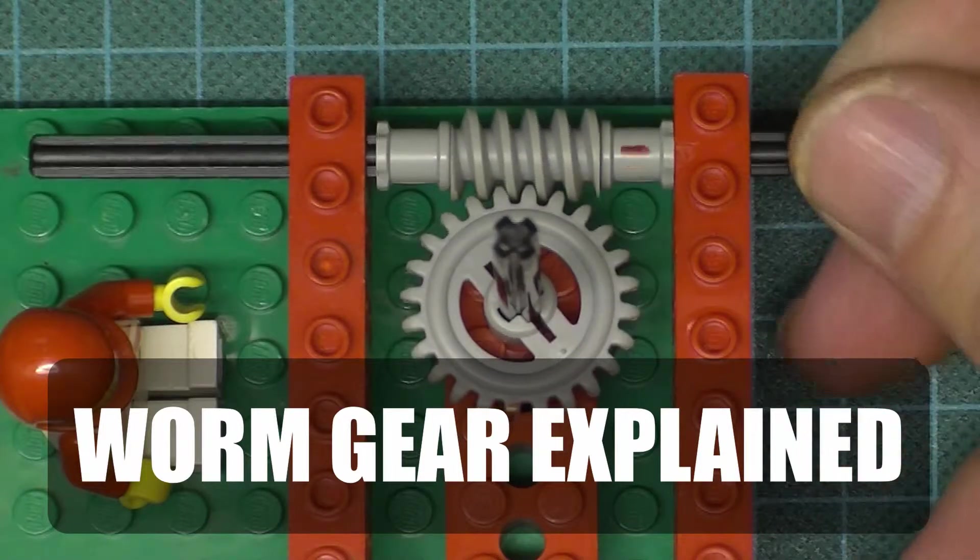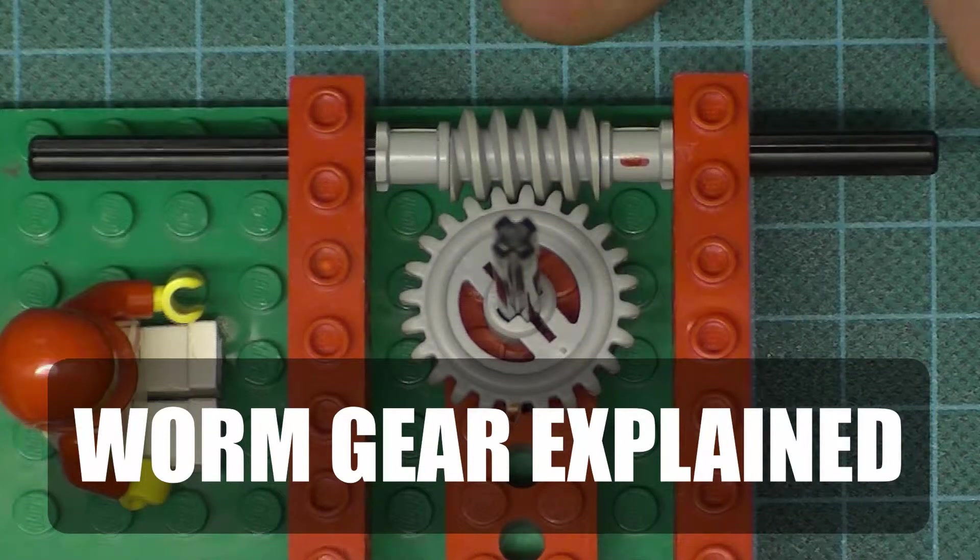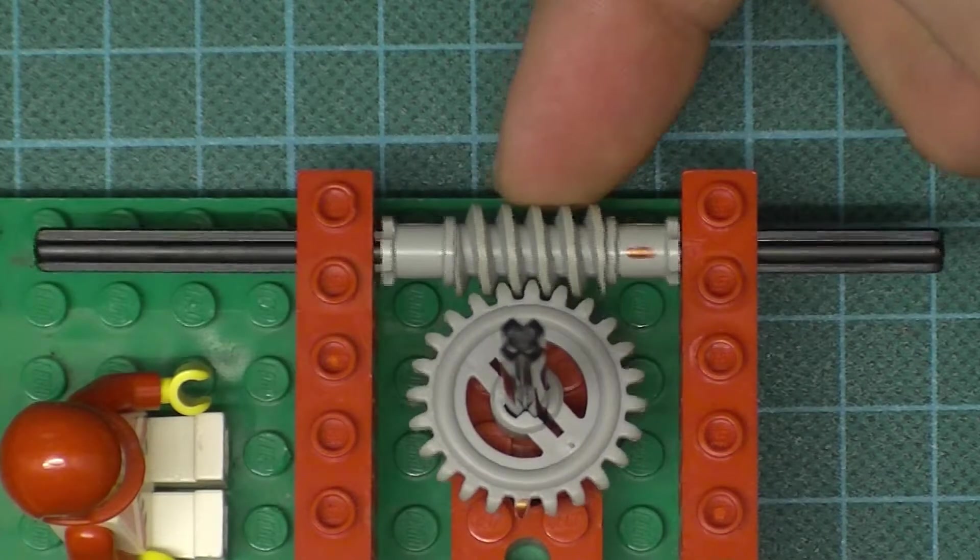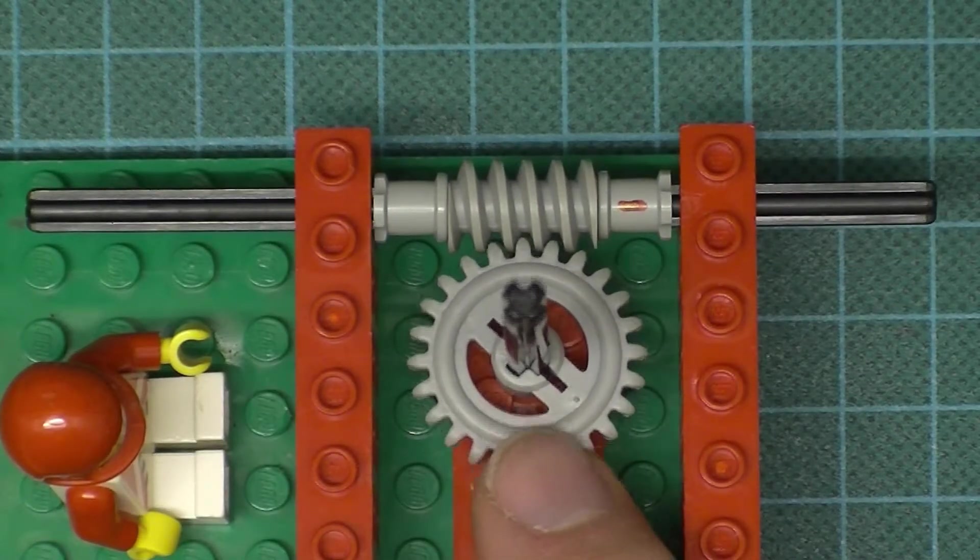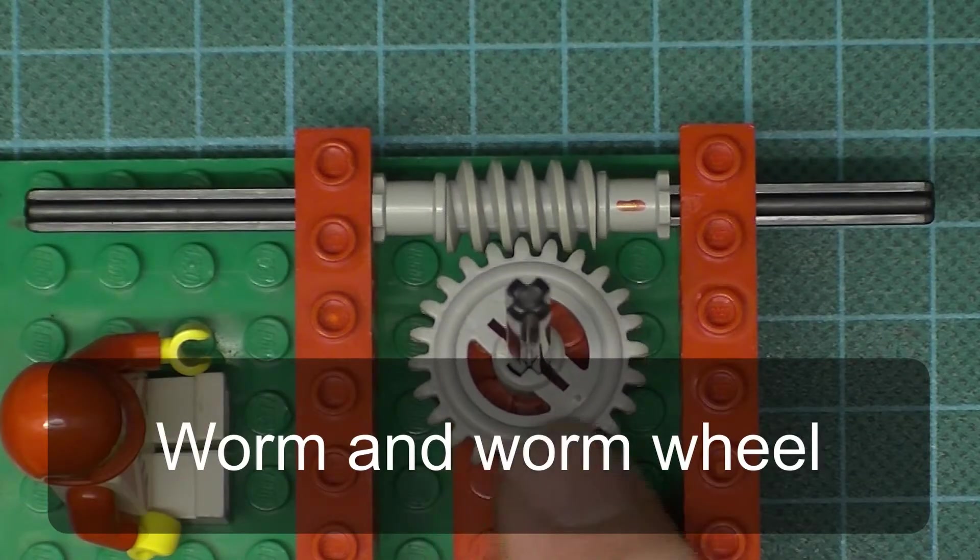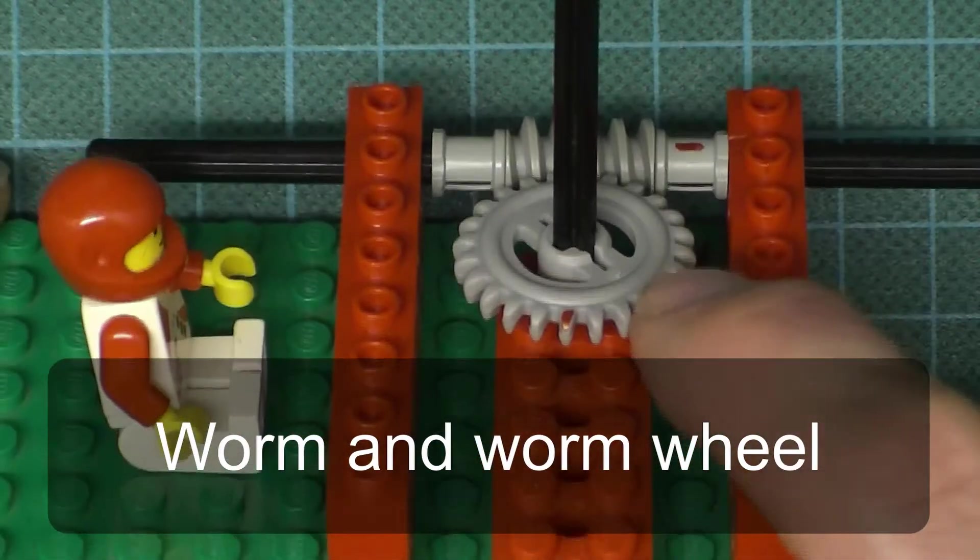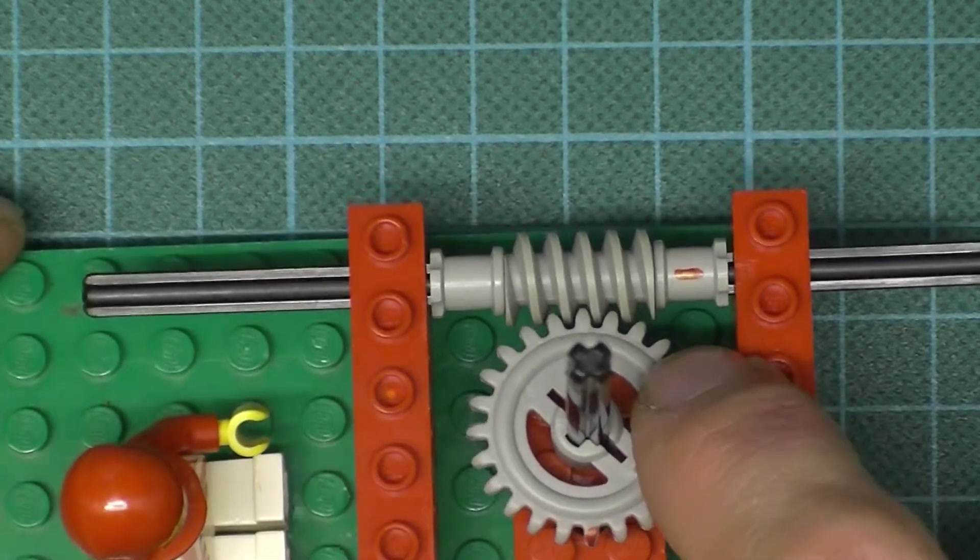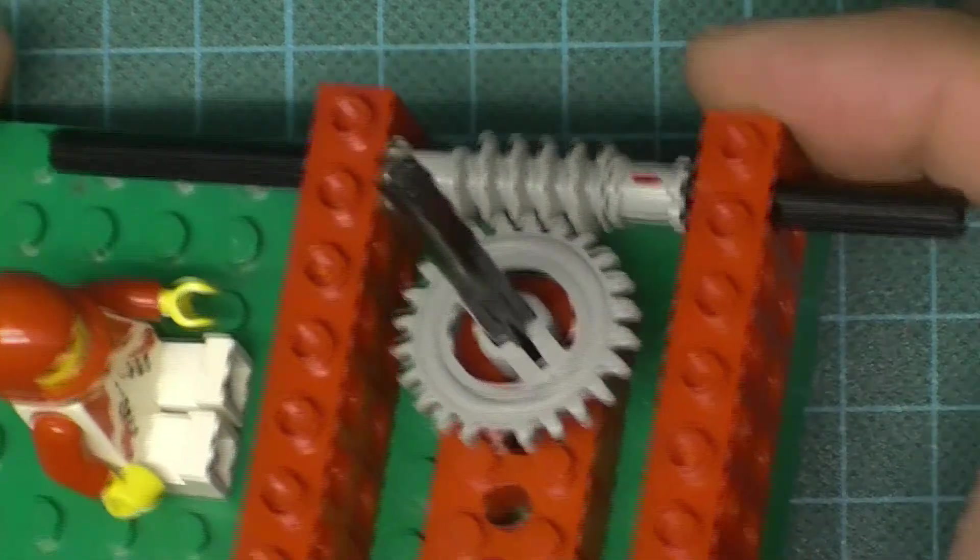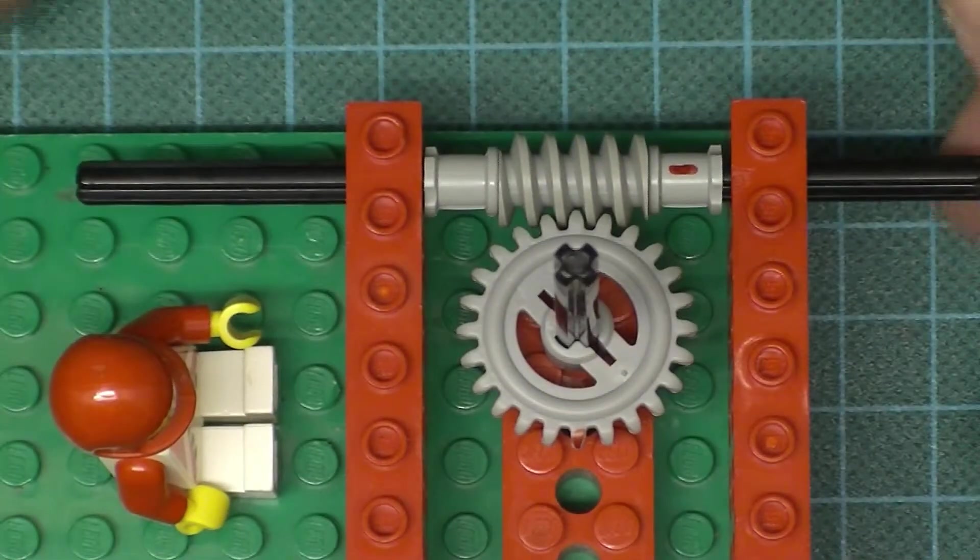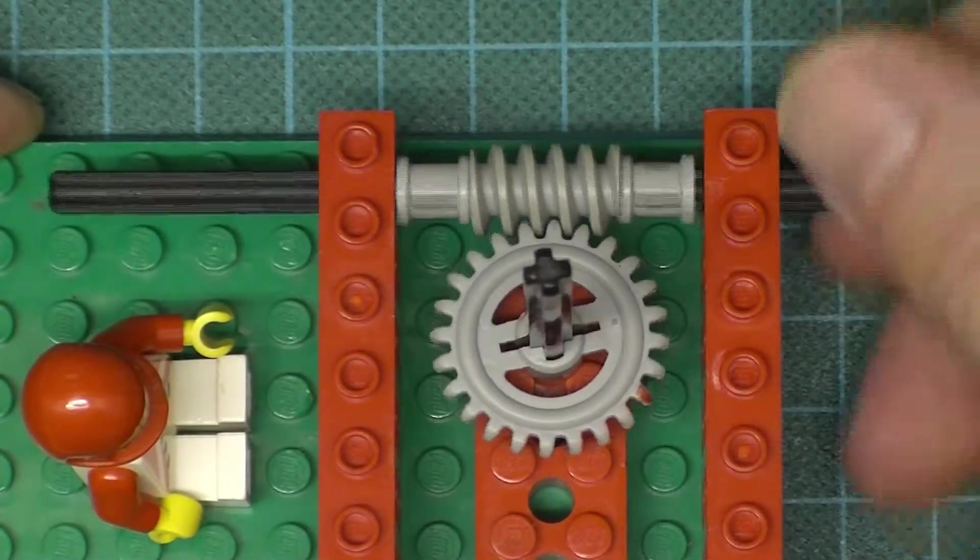If you take a look at this gear arrangement here, hopefully you're going to recognize this. This is called a worm, and then this part is called a worm wheel. Sometimes it's called a spur gear, however it should be cut slightly different from a spur gear, but I'm not so sure whether it is in Lego. Anyway, we can turn this part.